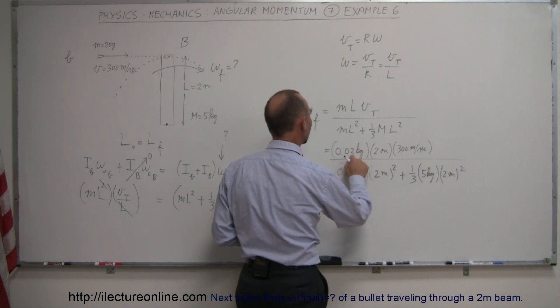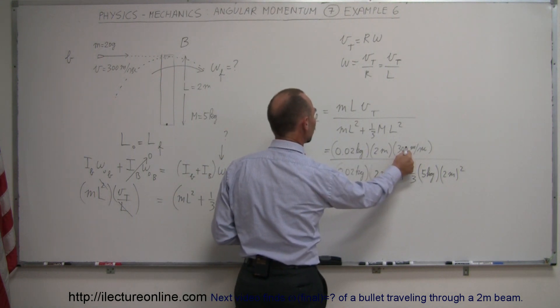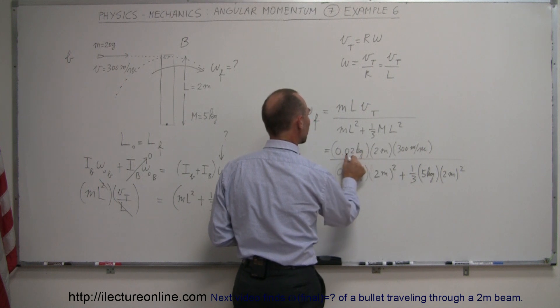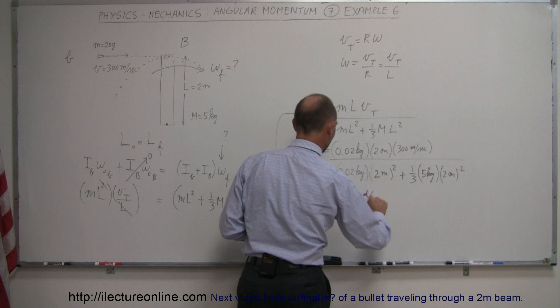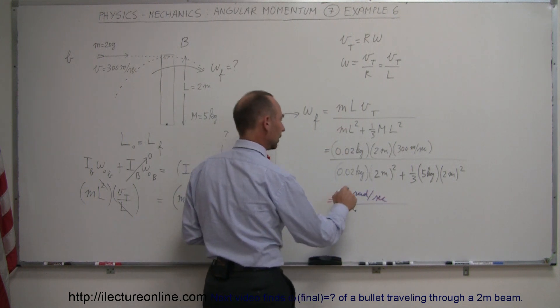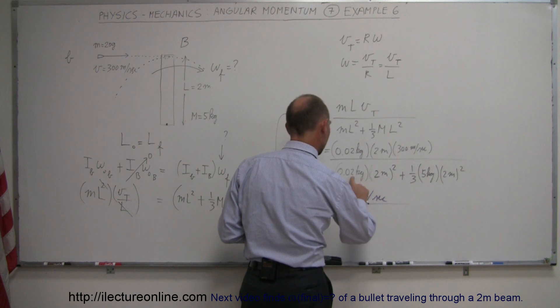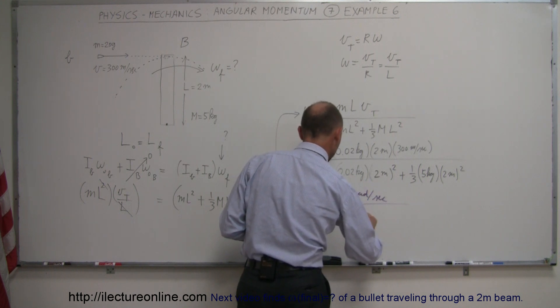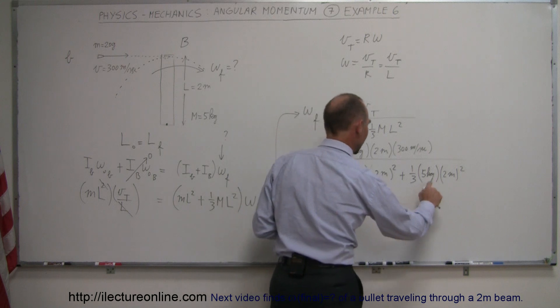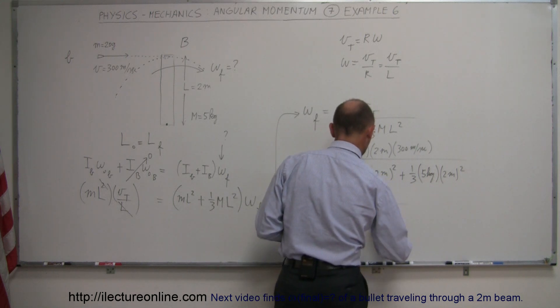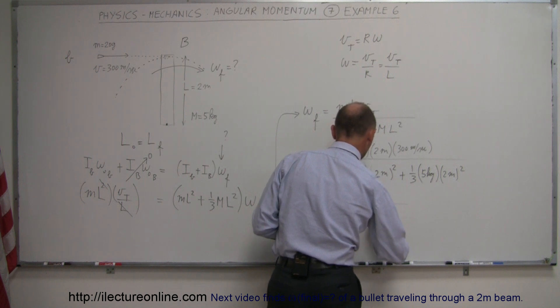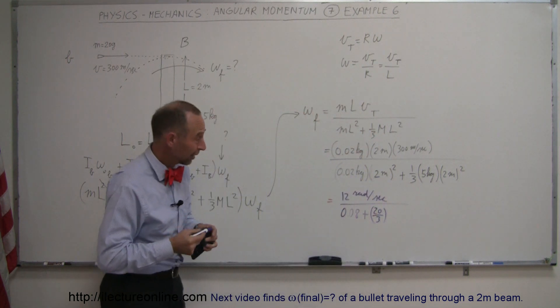So 0.02 times 2 would be 0.04 times 300. The two zeros get rid of the decimal place, that would be 4 times 3 which is 12 radians per second divided by... that's 4 times 0.02 which would be 0.08 plus, here we have 5 times 4 which is 20 divided by 3, which is 20 over 3. I think we're ready now to calculate this.